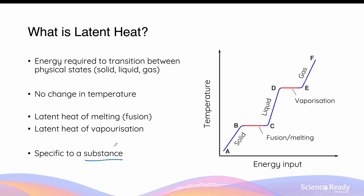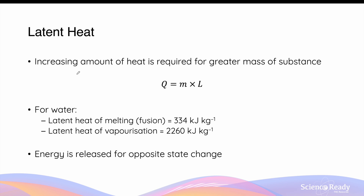For example, this value may be different for water compared to a metal. Similar to changing the temperature of a substance, the amount of energy required to transition between different states of matter also depends on the mass of the substance — a greater mass requires a greater amount of heat. This relationship is summarized in the equation Q equals mass multiplied by the latent heat L, where L could be either the latent heat of melting or the latent heat of vaporization.